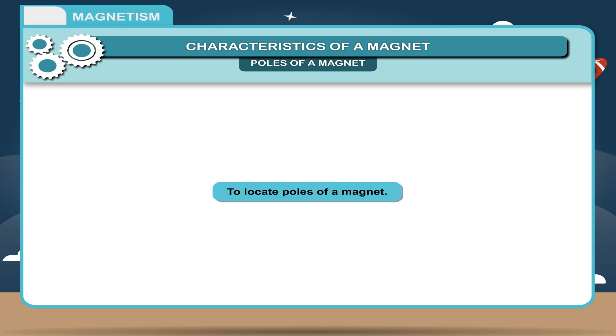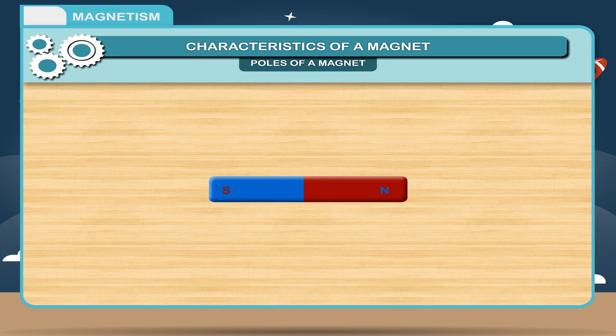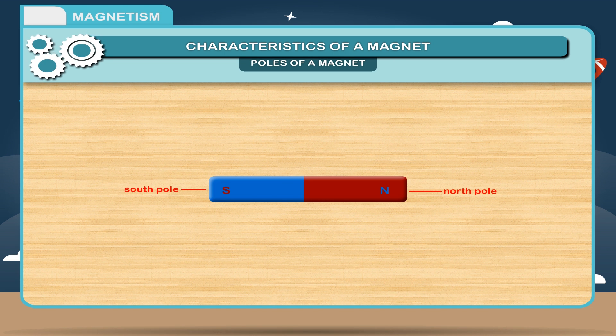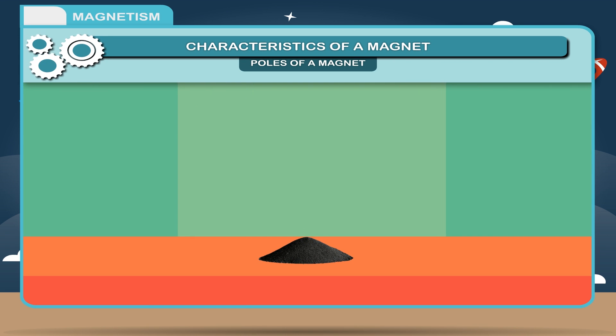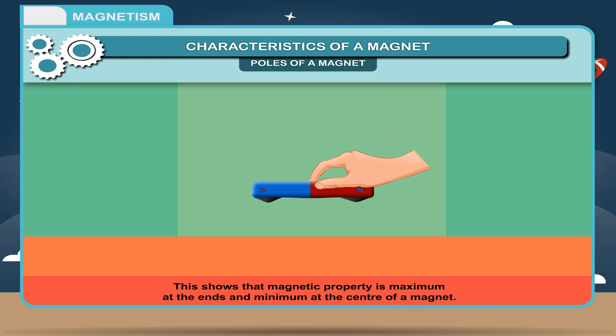Activity: To locate poles of a magnet. A magnet has two poles, north pole and south pole. Spread some iron filings on the tabletop and place a magnet over there. The iron filings start clinging more towards the end of the magnet and very less at the middle of it. This shows that magnetic property is maximum at the ends and minimum at the center of a magnet. So, the regions at the ends of a magnet where attraction is maximum are called the poles.